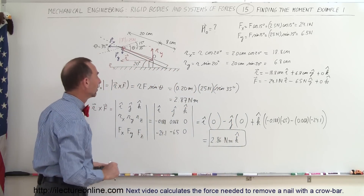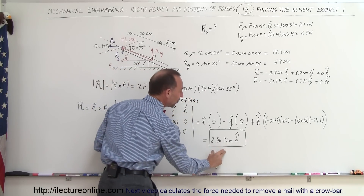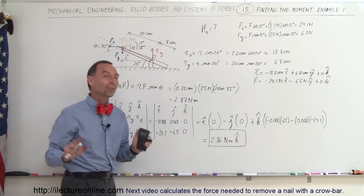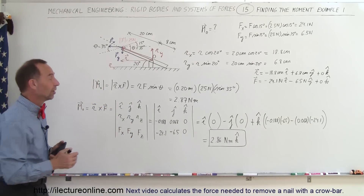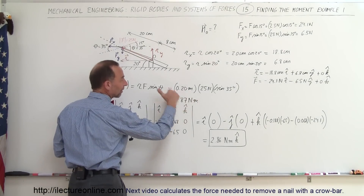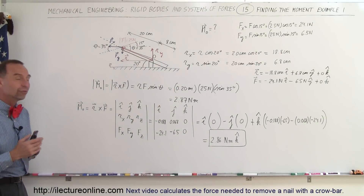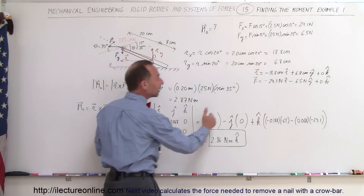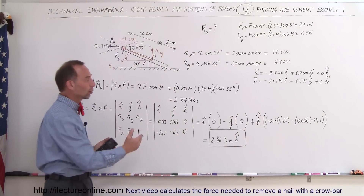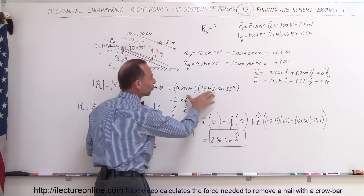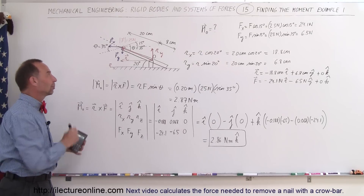Did we get the same result? With a slight rounding error, Method 1 gives 2.87 Newton-meters and Method 2 gives 2.86 Newton-meters in the K direction — very close. Note that Method 1 only gives you the magnitude, so you must determine the direction using the right-hand rule. Method 2 gives you the result in vector format with I, J, and K components; if needed, use the Pythagorean theorem to find the total magnitude. Both methods are valid for finding the moment.